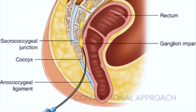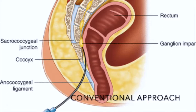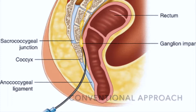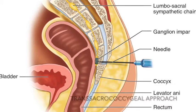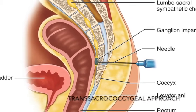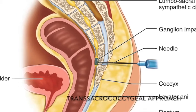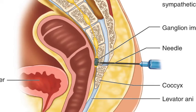There are two approaches for the Ganglion Impar block. One is the conventional approach where using a curved needle we go through the tip of the coccyx and reach the anterior sacrococcygeal junction behind the rectum. The other approach is the trans-sacrococcygeal approach where using a straight 22 gauge needle we go through the transdiscal route and reach the Ganglion Impar.